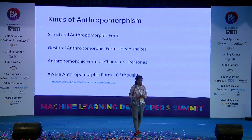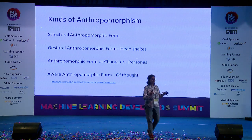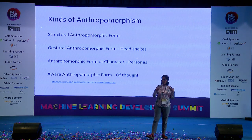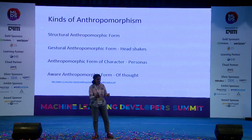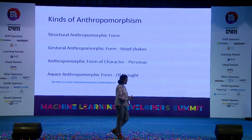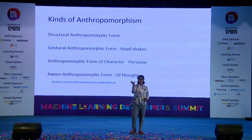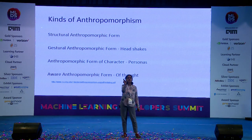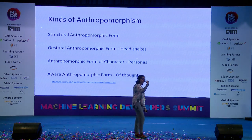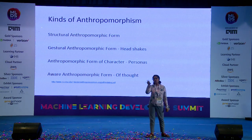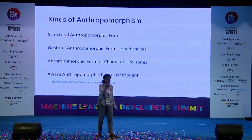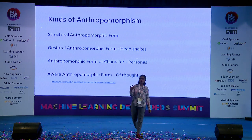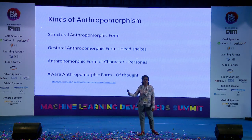Gestural anthropomorphic form is where the machine understands a gesture or communicates in gestures as if talking to a human being. Examples include robots, but also things like your phone's vibration — the symbol it gives is like a handshake or head shake, as if it's gesturing to you. These are nonverbal and visual cues that play on our heads to help us connect to a machine better.